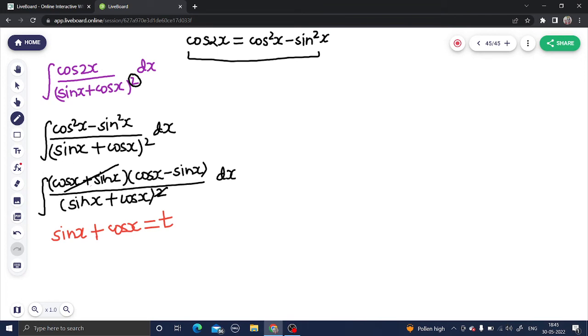Derivative of sin x everyone knows is cos x and that of cos x is minus sin x equals dt by dx. I am taking dx this side. So this becomes cos x minus sin x dx equals dt.